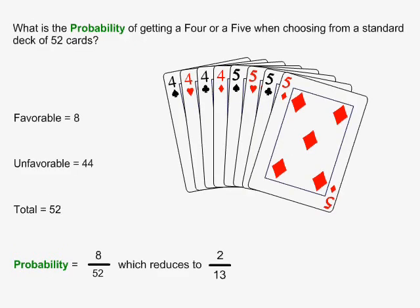In this example, what is the probability of getting a 4 or a 5 when choosing from a standard deck of 52 cards? There are 4 fours in a deck of cards and there are 4 fives, so the total number of favorable cases is 8. There are 44 cards in the deck that are not a 4 or a 5, so the unfavorable is equal to 44. The total is 52. Probability is equal to favorable over total, which is 8 over 52, reducing to 2 over 13.